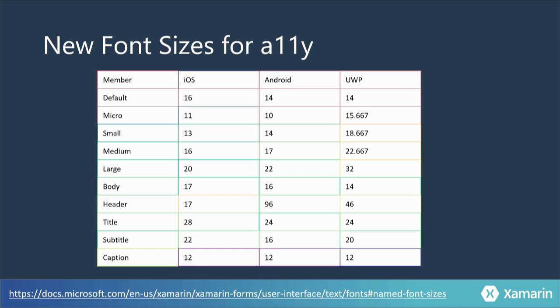When the user goes into the accessibility settings and switches their font size, they automatically get the benefit of the resize. Whereas if you hard code those text sizes, it's fixed. It's up to you to use your discretion and work with your team to figure out where to use named font sizes and where to use fixed font sizes. It's not an all-or-nothing thing — you use it as it makes the most sense.